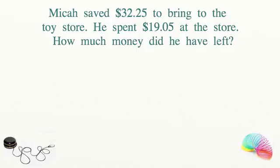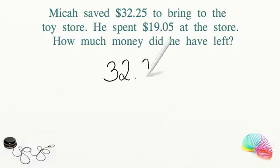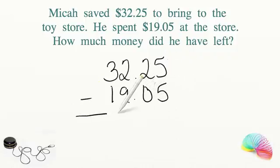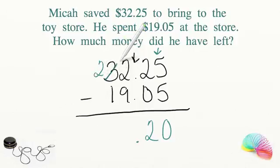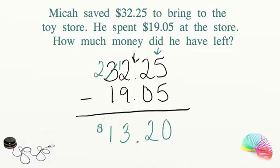Let's try a word problem together. Micah saved $32.25 to bring to the toy store. He spent $19.05 at the store. How much money did he have left? We set up $32.25 minus $19.05, making sure to line up our decimals. Starting at the hundredths place: 5 minus 5 equals 0; 2 minus 0 equals 2. Bring down the decimal. We can't subtract 9 from 2, so we regroup from the tens and bring it over to the ones: 12 minus 9 equals 3; 2 minus 1 equals 1. Micah had $13.20 left over.